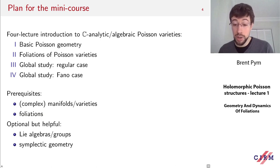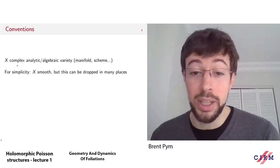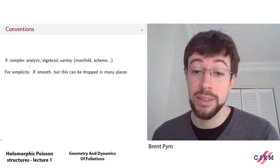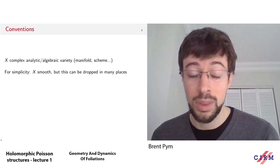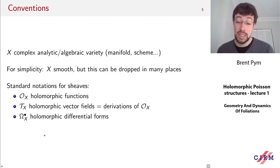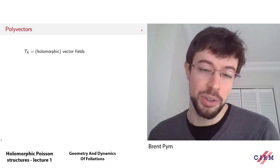I'm going to give plenty of examples of Poisson structures in this lecture. Before doing that, I want to set a few conventions about notation and tensors. Throughout the course, X will be a complex analytic or algebraic variety — most of the time I'll assume X is smooth, so it's a complex manifold, though this assumption can be dropped in many places. I'll use standard notation: O_X is the sheaf of holomorphic or regular algebraic functions on X; T_X denotes the vector fields on X (derivations of functions); Omega denotes the differential forms; and so on.